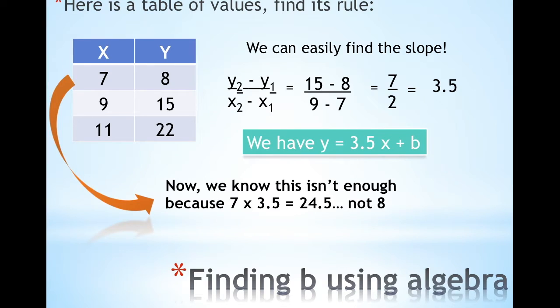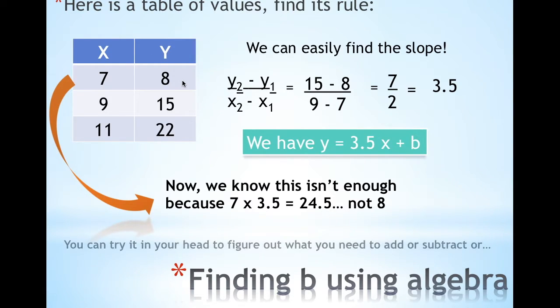So if we plug it into our rule so far we have y = 3.5x + B. Now we know that's not enough because if we do 7 times 3.5 we get 24.5, and that's definitely not 8. So we're looking at maybe subtracting something.